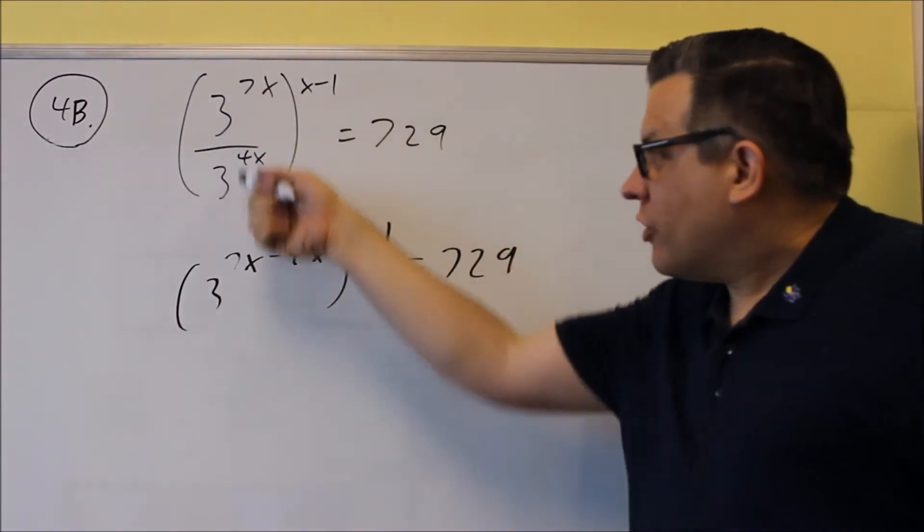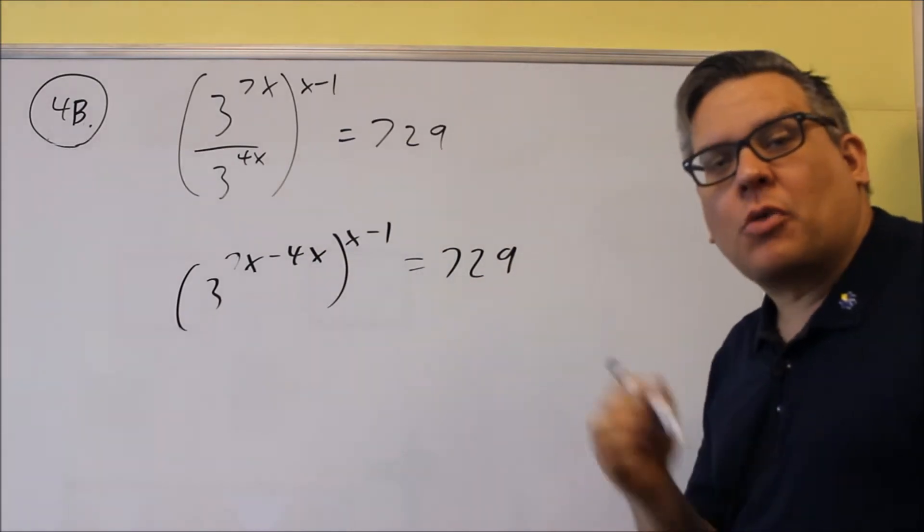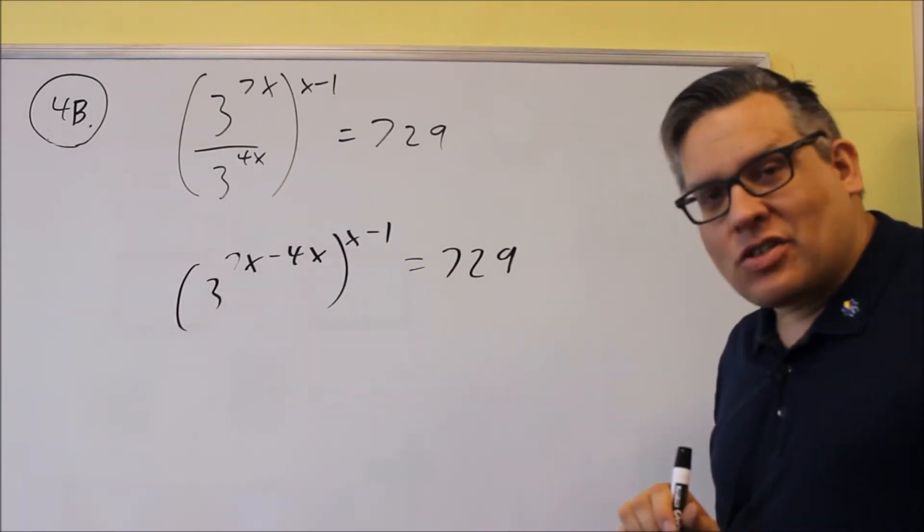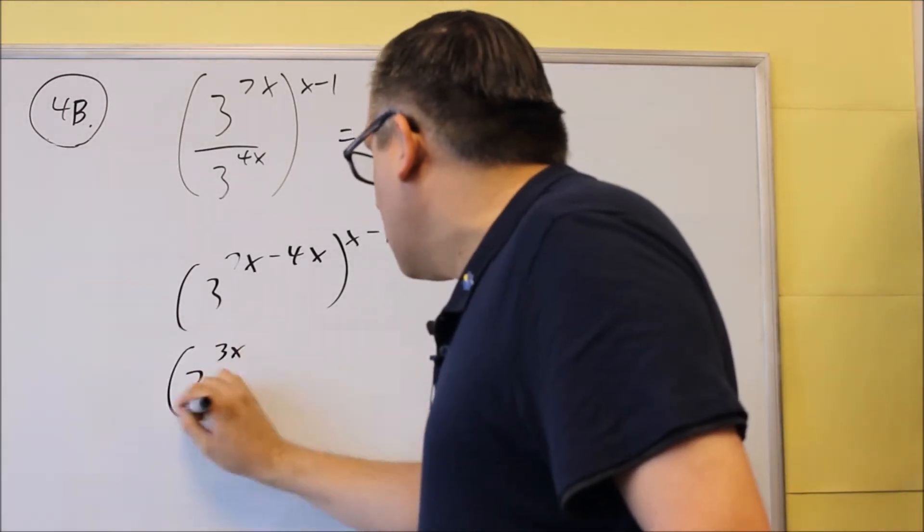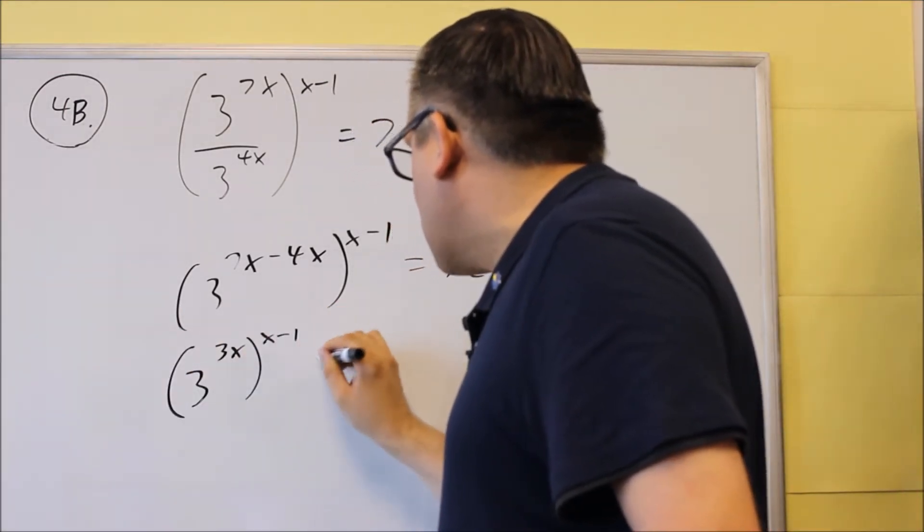When you're dividing you're going to subtract your exponents, when you're multiplying you're going to add. So we have to subtract in this case. Now that's going to give us 3 to the 3x, but that's still being raised to the x minus 1.